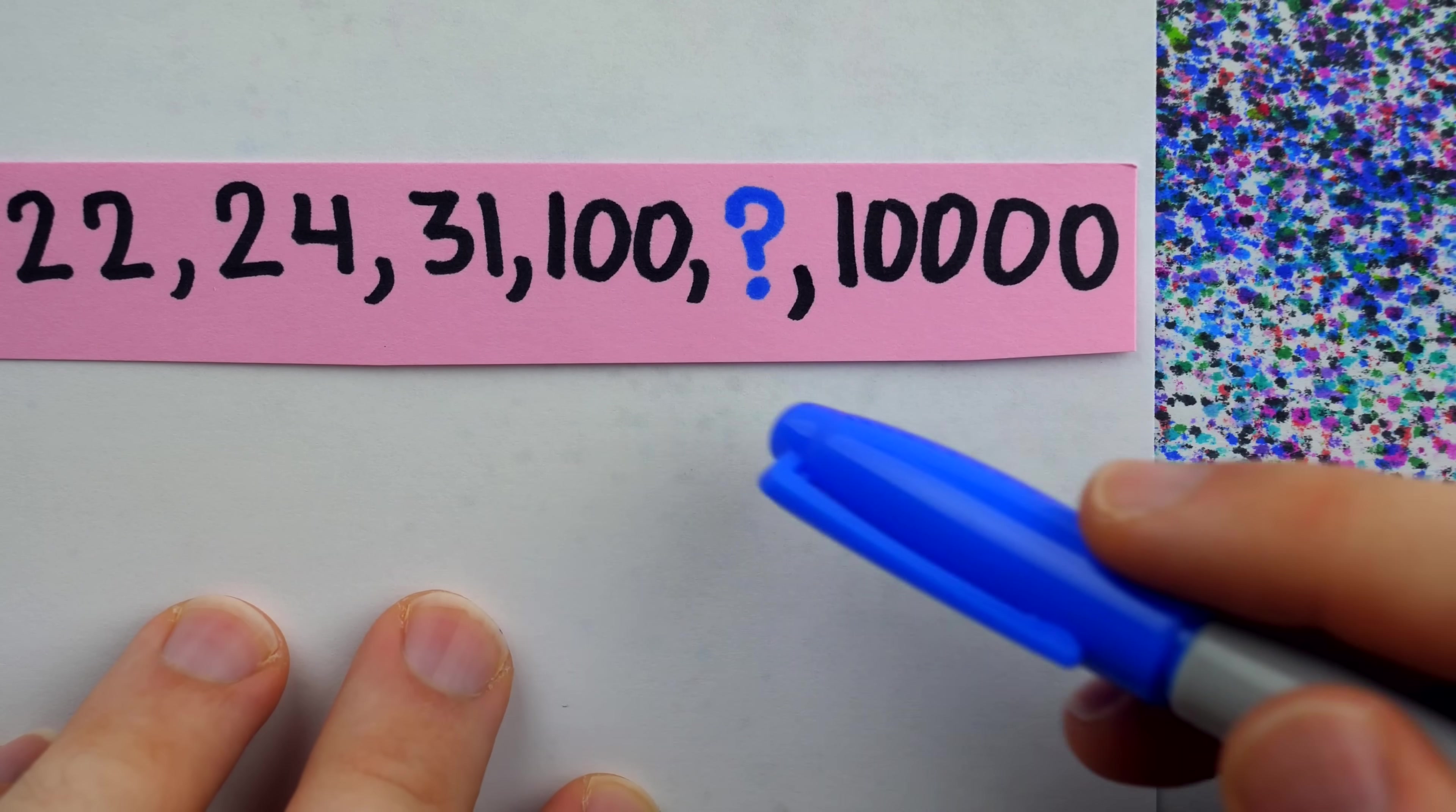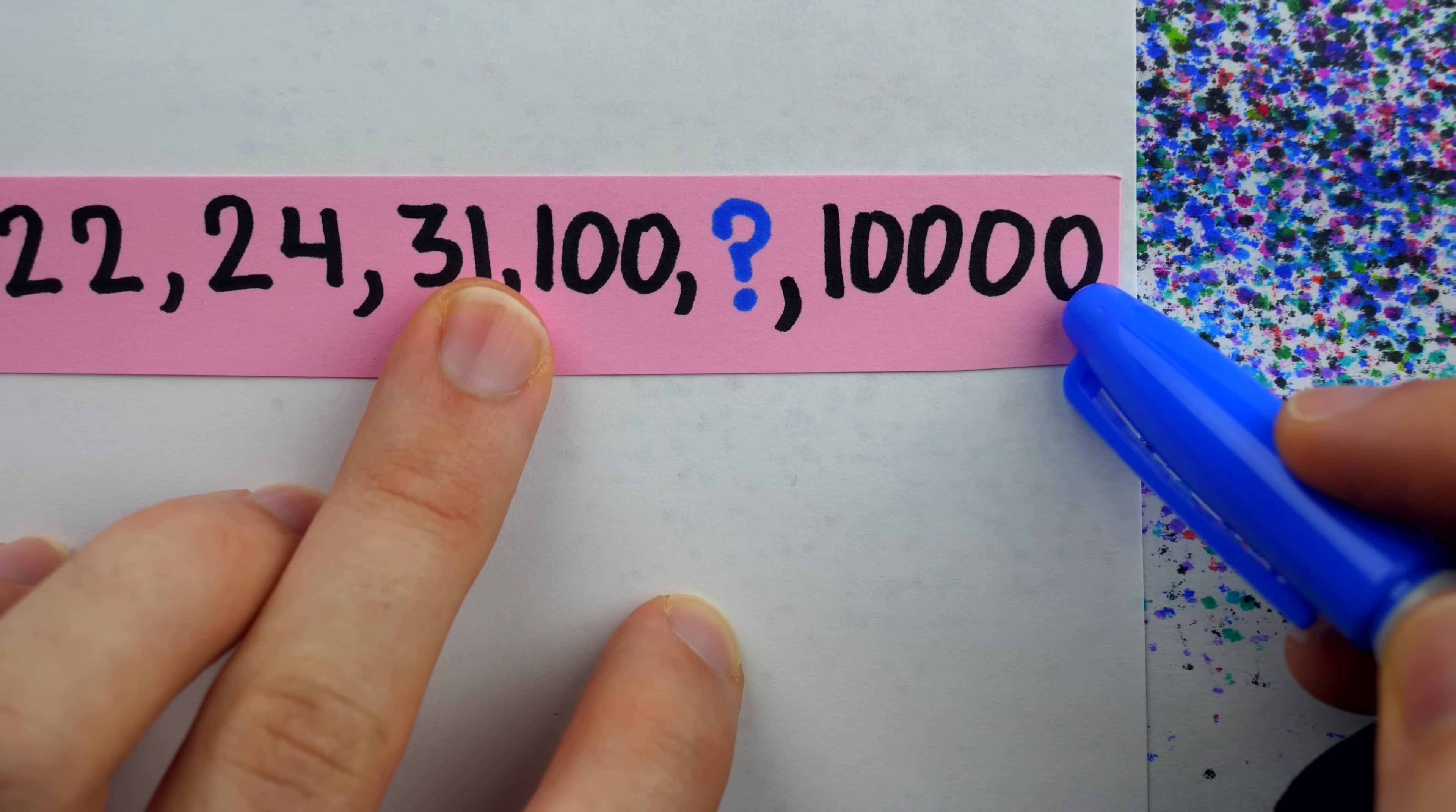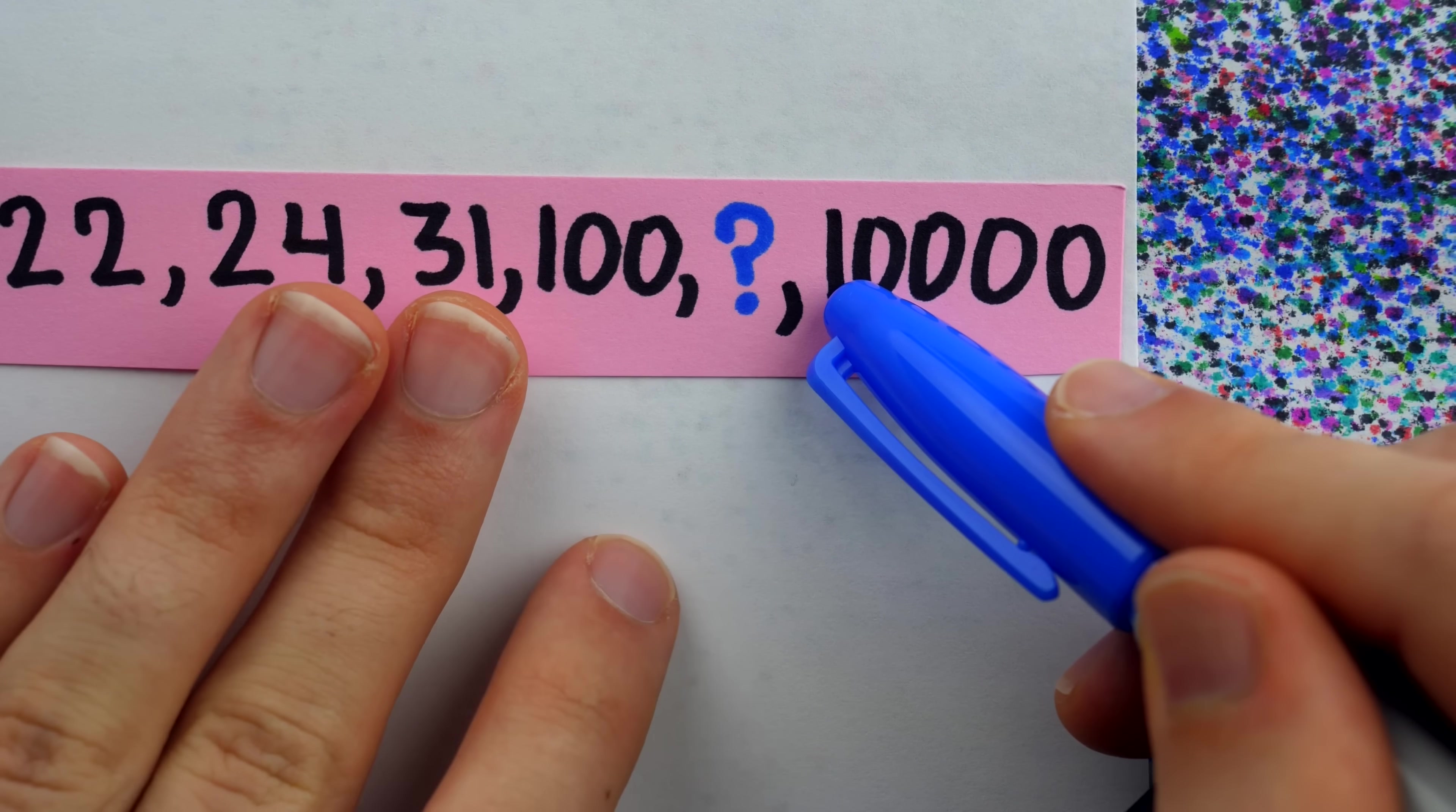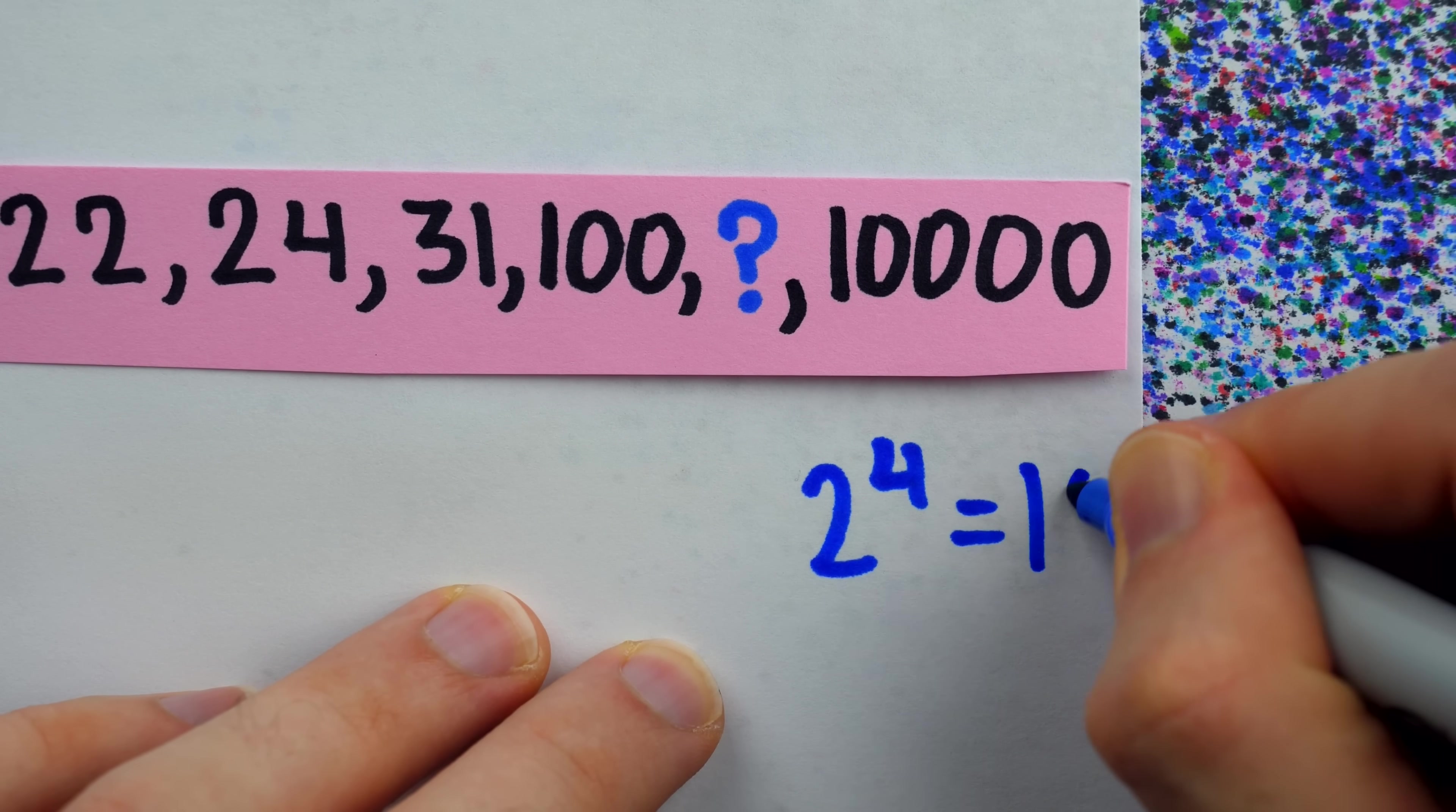If this was a number written in base 2, then this would represent 0 copies of 1, this would be 0 copies of 2 to the 1, 0 copies of 2 squared, 0 copies of 2 cubed, and 1 copy of 2 to the power 4, which we know is 16.